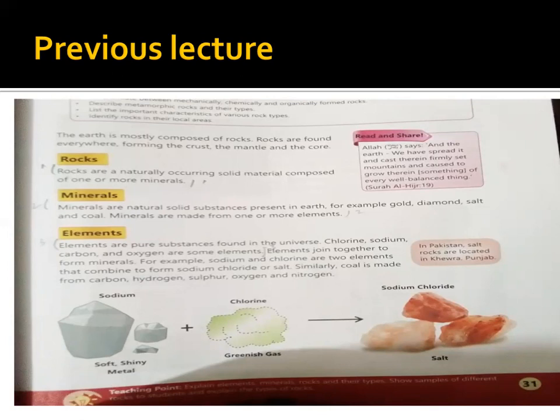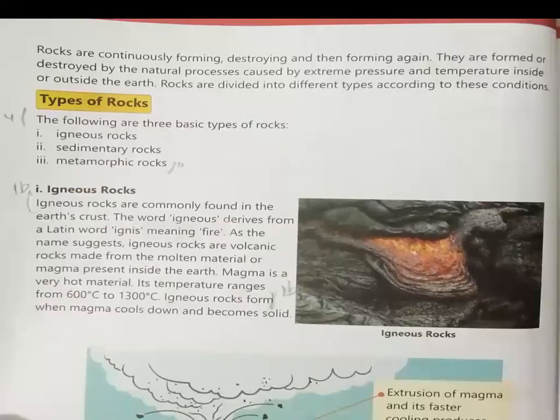Similarly, coal is made from carbon, hydrogen, sulfur, oxygen and nitrogen. In the previous lecture, rocks, minerals and elements were discussed.